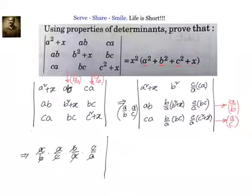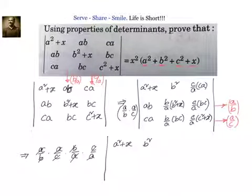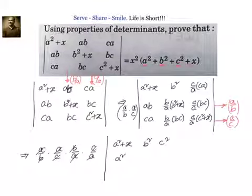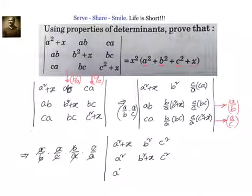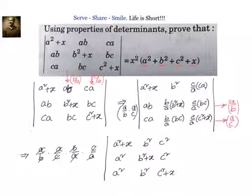After these operations, the first row remains a squared plus x, b squared, c squared. In the second row, multiplying by a/b gives a squared, b squared plus x, and c squared. In the third row, multiplying by a/c gives a squared, b squared, and c squared plus x. This simplifies the problem considerably.